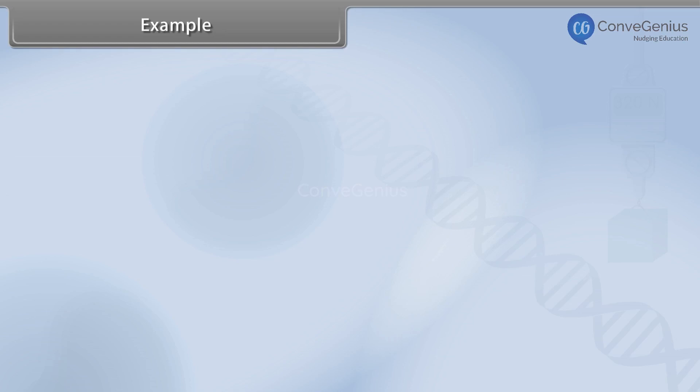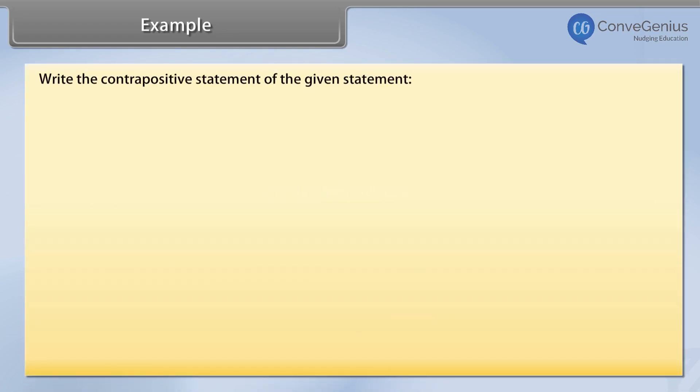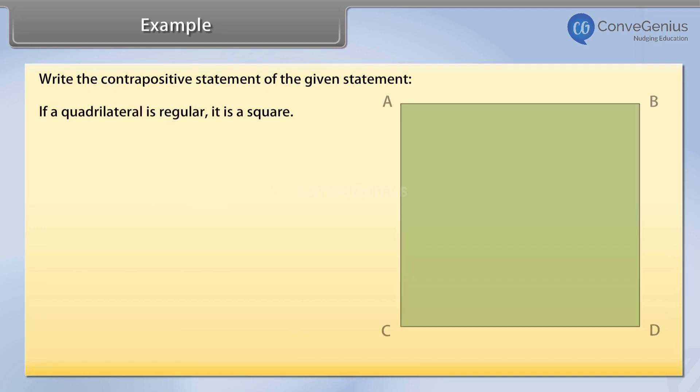Example. Write the contrapositive statement of the given statement: If a quadrilateral is regular, it is a square.